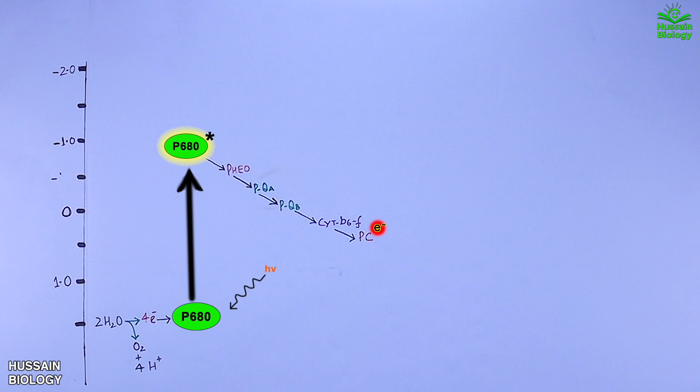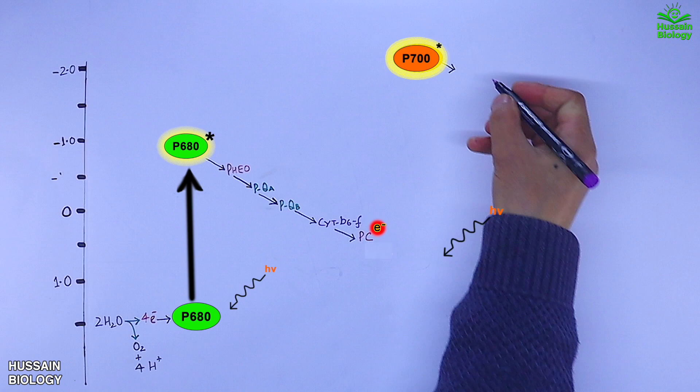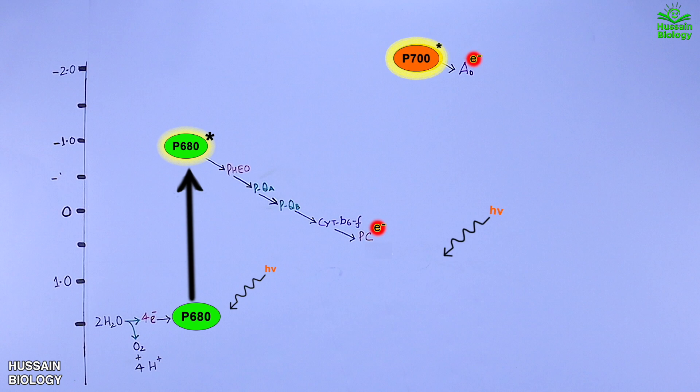On the other hand, when we look at photosystem I, that's P700, it also absorbs the photons as shown in the diagram and gets excited to higher energy state with its electrons. Now the excited P700 easily gives off its energized electrons to the electron acceptor A0, which is actually a modified chlorophyll molecule, and P700 itself gets oxidized. Now the oxidized P700 comes back to its initial state but it's short of electrons as it has been oxidized.